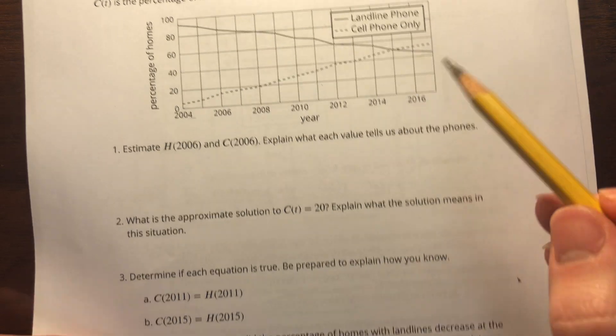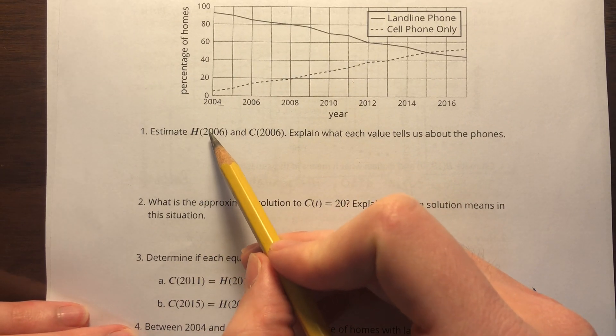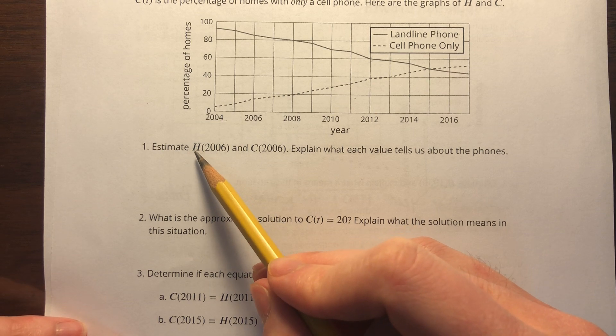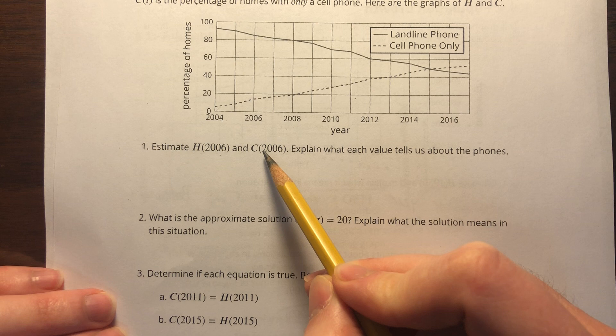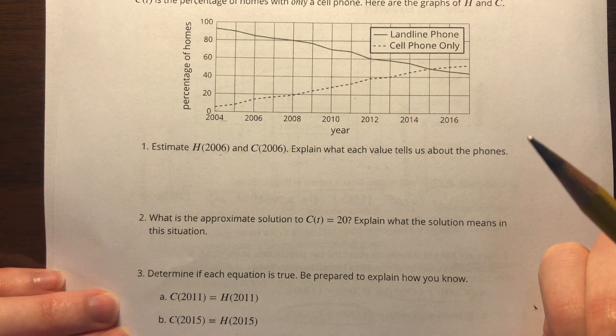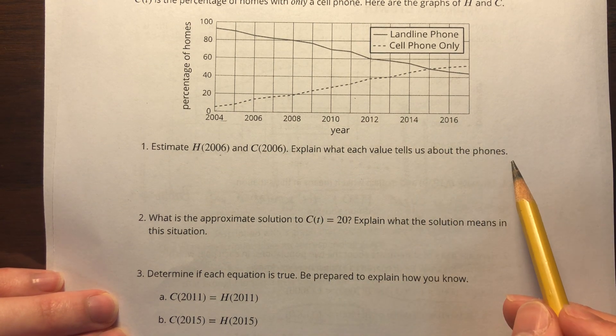Estimate H(2006), the number of people with landlines in 2006, and the number of people with only cell phones in 2006. Explain what each value tells us about the phones.